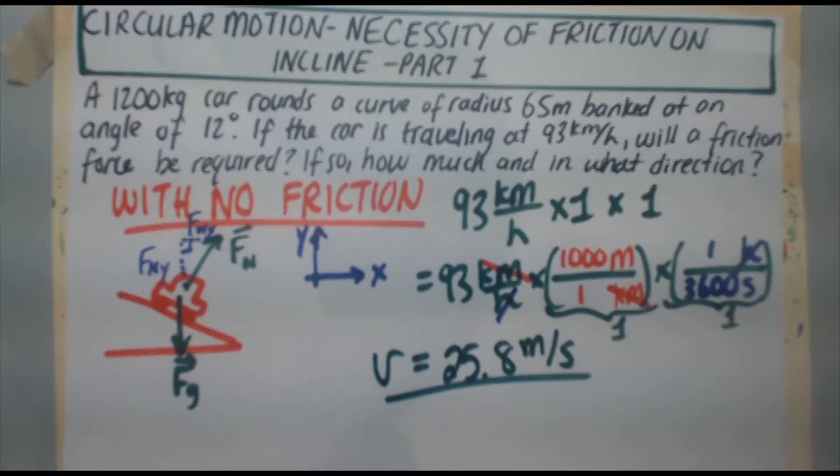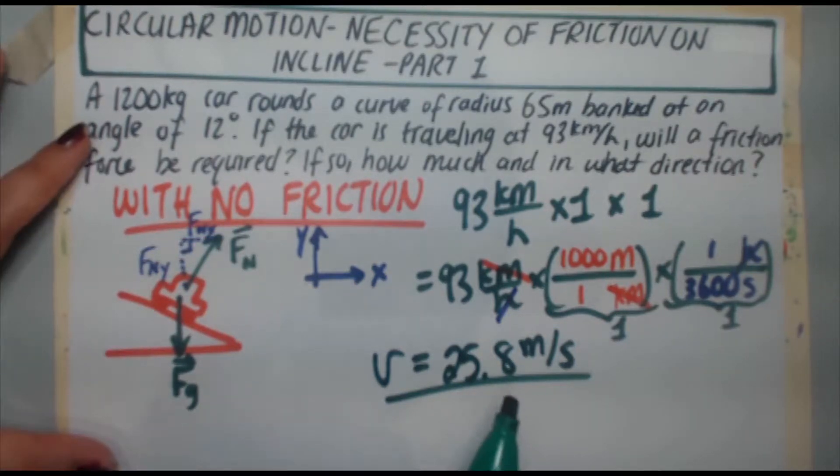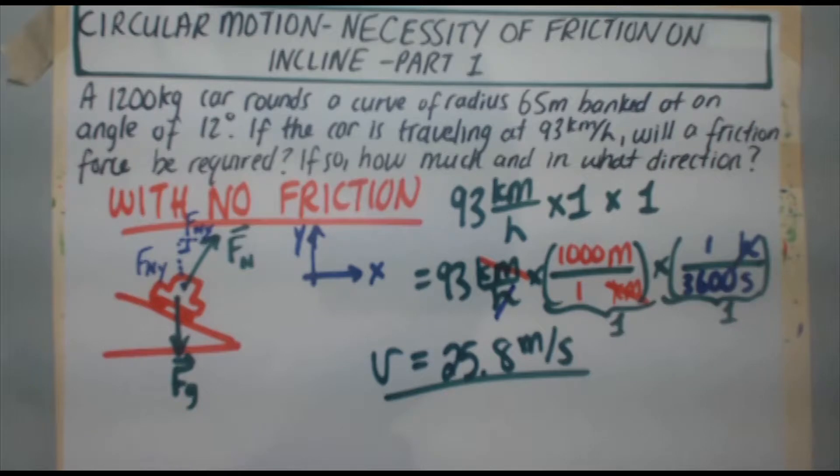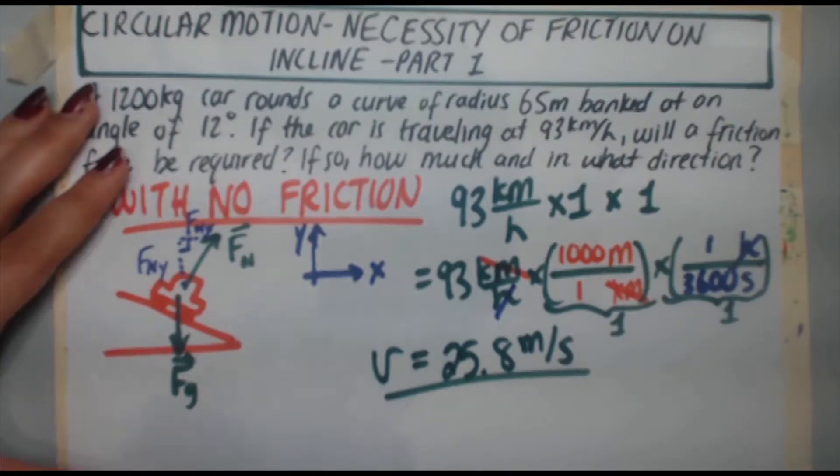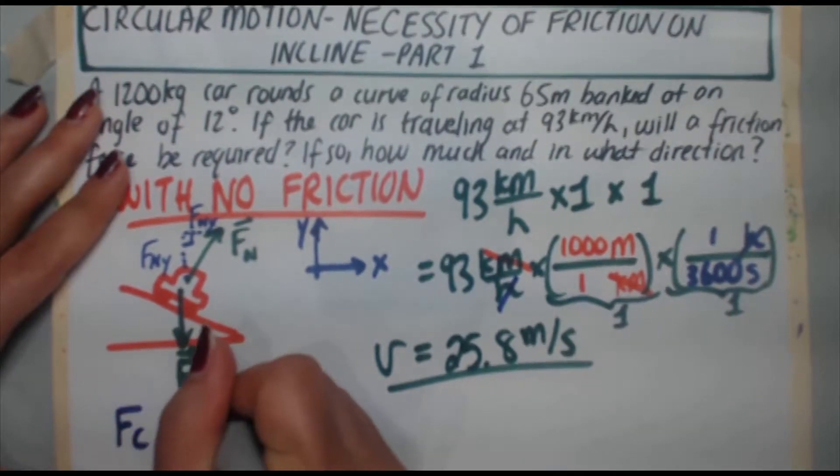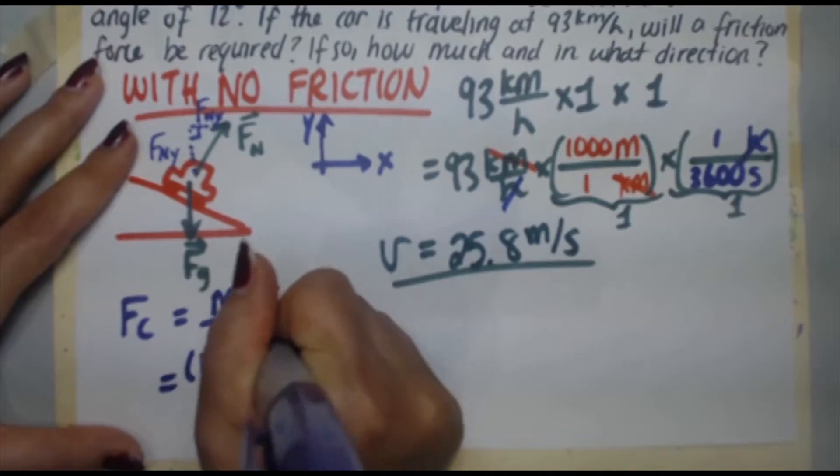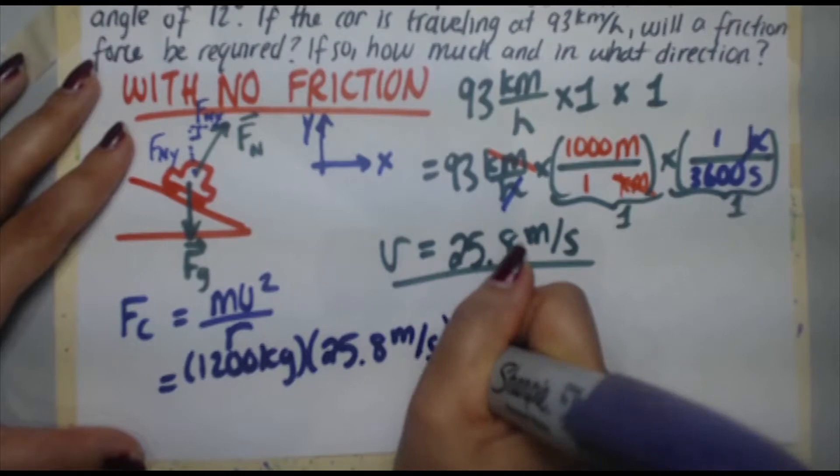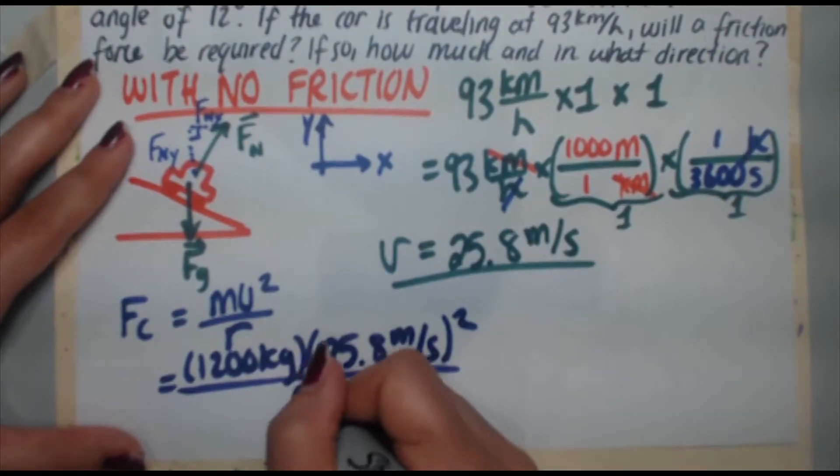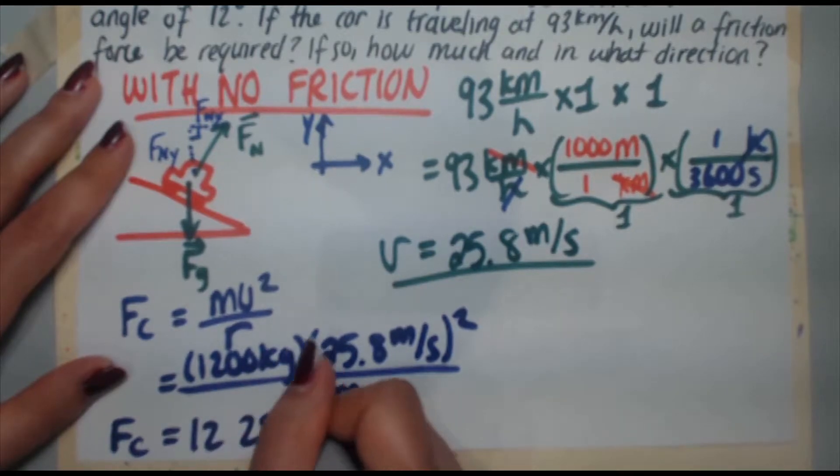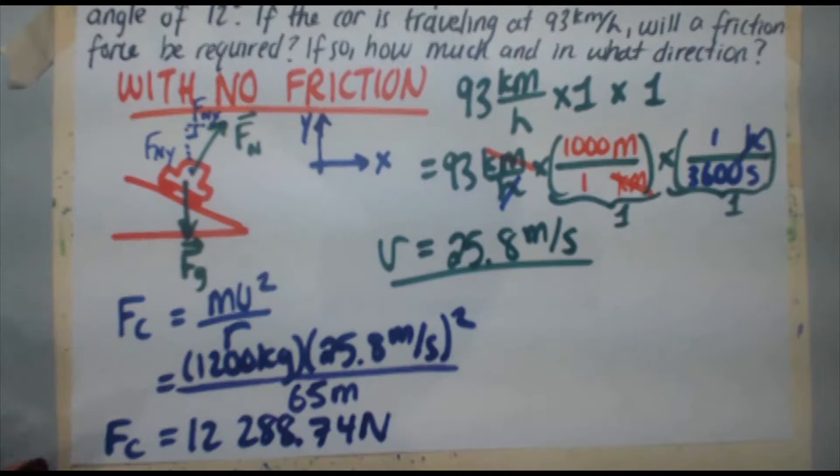Now given the speed, I want to see if friction isn't required. So what I'm going to do, because this car is going around a bank, I'm going to figure out what the centripetal force of this car is. Going at that speed, having that mass, the radius of the curve being that, what's the centripetal force that's going to act on the car? And then I'm going to see, is Fnx enough to compensate for it? Is that all of it? Is it just Fnx? So my next task is to find the centripetal force. So Fc is equal to mv squared over r. Let's plug in our values. The mass is 1,200 kilograms. My speed is 25.8 meters per second. That gets squared and divided by the radius of the curve, 65 meters. When you do that, you're going to get that the centripetal force equals 12,288.74 newtons. So there's that.